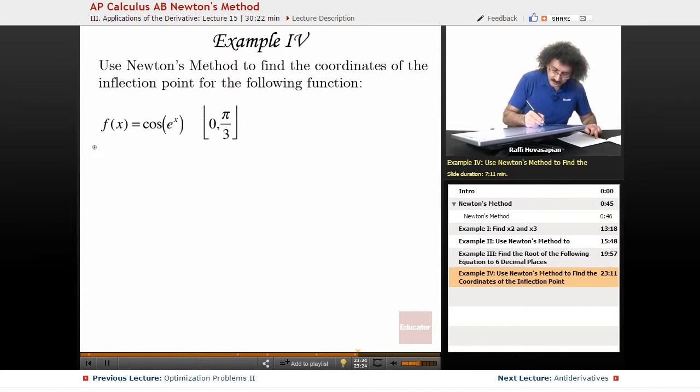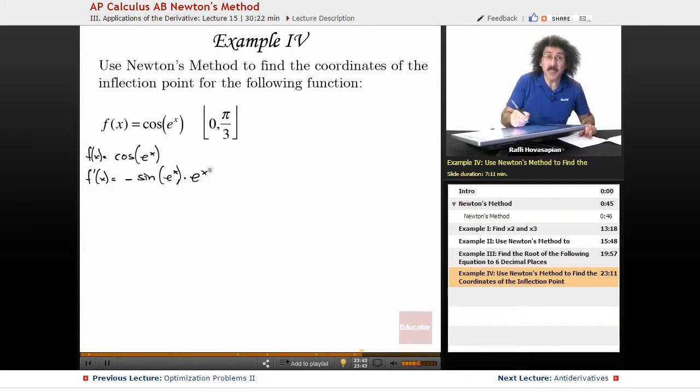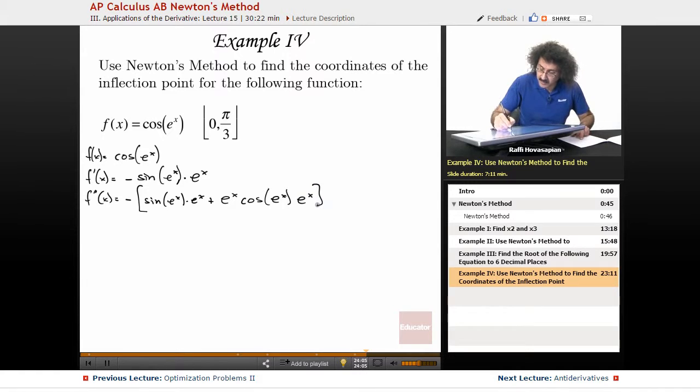So here, f of x equals the cosine of e to the x. f prime of x equals minus sine e to the x times e to the x. f double prime is equal to minus sine e to the x times e to the x, this is product rule, plus e to the x times the cosine of e to the x times e to the x.